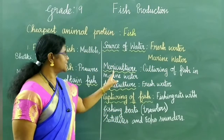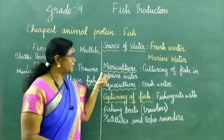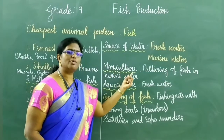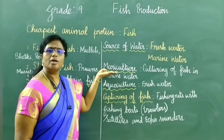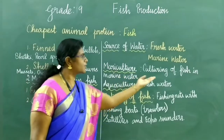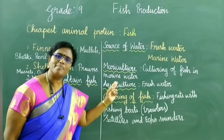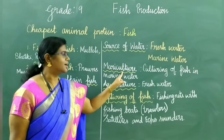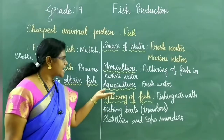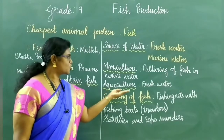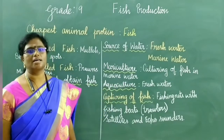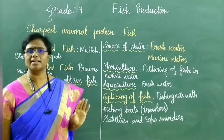What is mariculture? 'Marine' refers to salt water, and 'culture' means growing. So mariculture means culturing of fish in marine water — that is, growing fish in salt water. Next is aquaculture — 'aqua' means fresh water, so culturing of fish in freshwater is called aquaculture. These are the two types of fish culturing: mariculture and aquaculture.